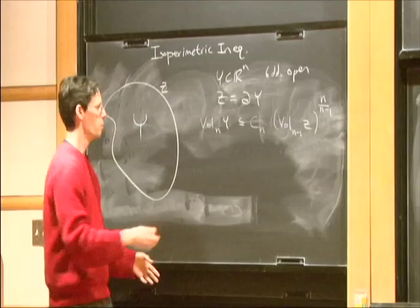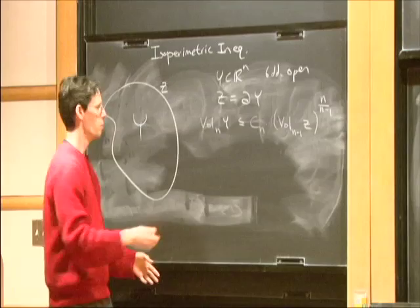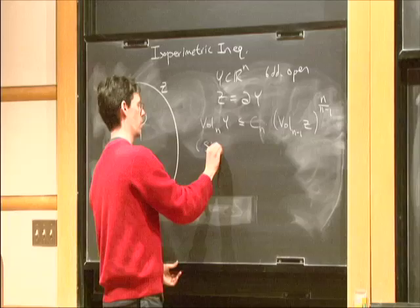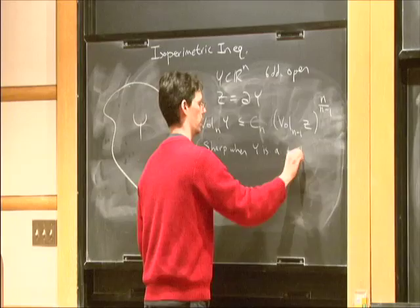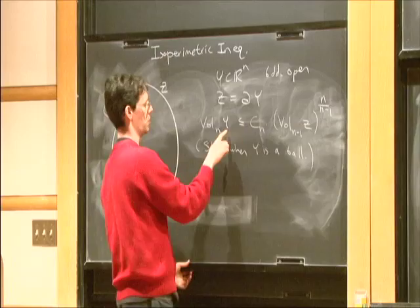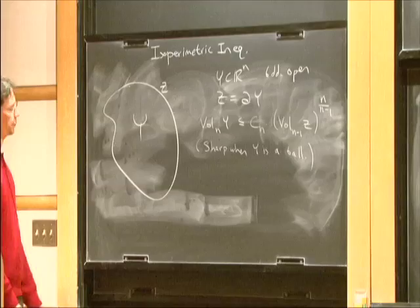This constant cn is a kind of complicated number, but the way to think about it is that this is sharp when Y is a ball. That fact encodes what this constant is. If you put in Y being a ball and Z being a sphere and work this out, you'll get a number here. That's the constant.